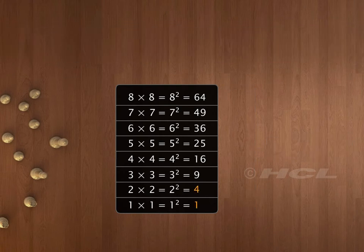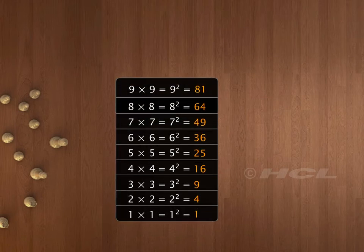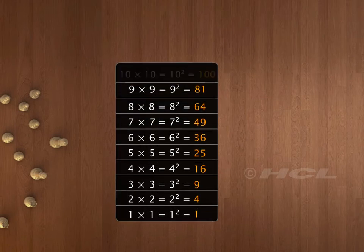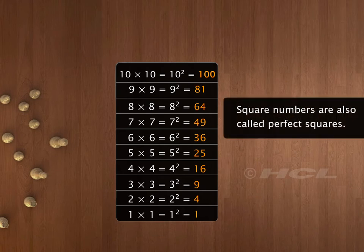So, numbers 1, 4, 9, 16, etc., are called square numbers. Here is the list of square numbers till 100. Square numbers are also known as perfect squares.